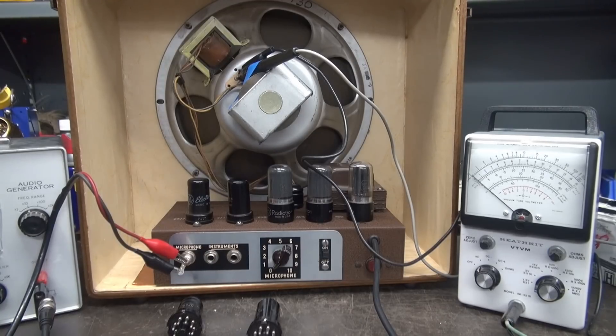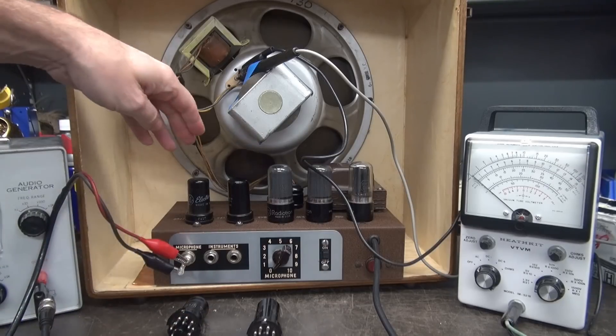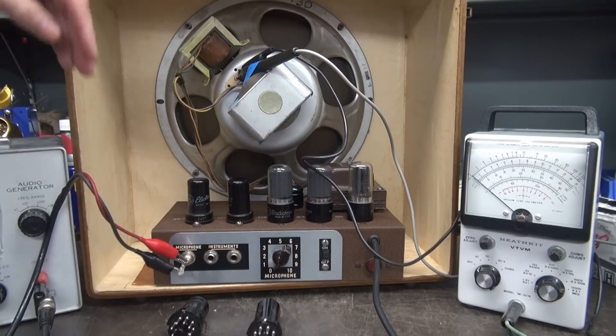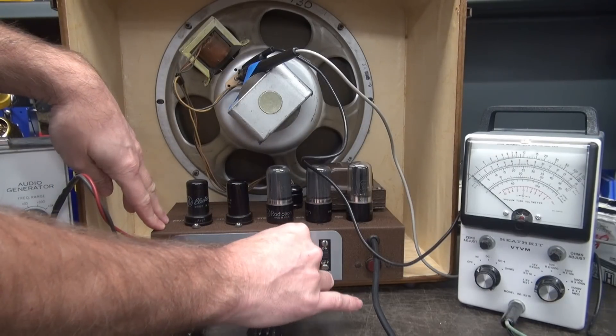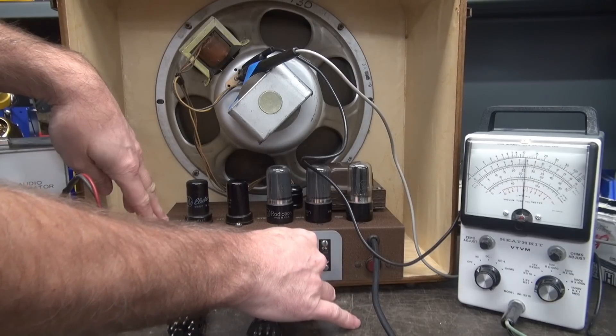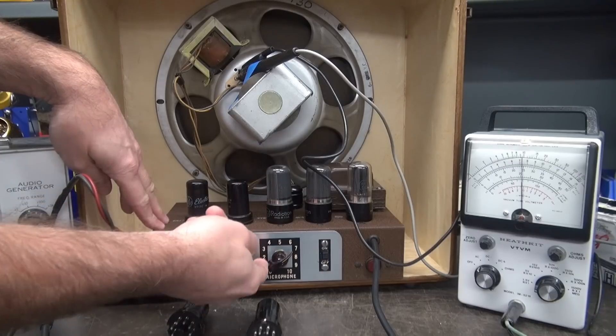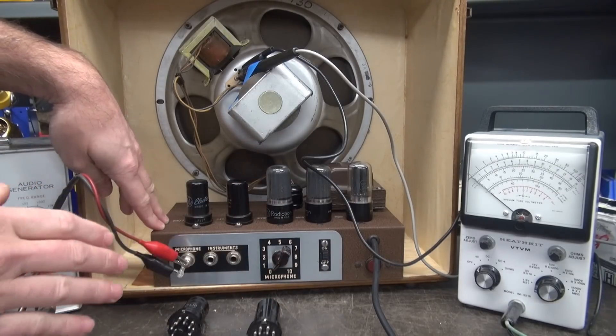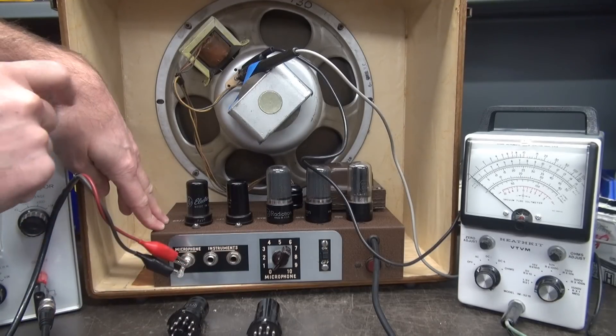I believe we're warmed up enough. Now I have removed the 6SJ7. The 6AC7 is installed with the stock inverter tube. Let's recheck our gain. Here we go. Remember we're looking for mid scale. Oh yeah. There's about mid scale and I'm at 7 now on the dial. Before I had to go to 10 right. So we've picked up quite a bit of gain using the 6AC7.